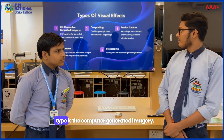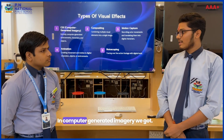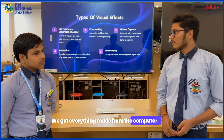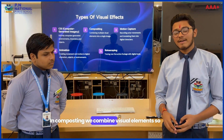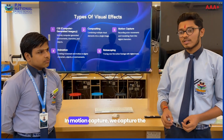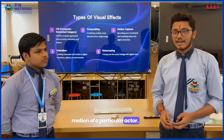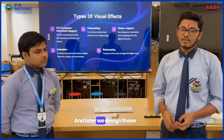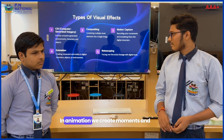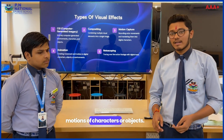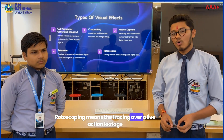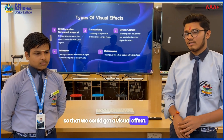In computer generated imagery, we get everything made from the computer. In compositing, we combine visual elements so that we could get a single image. In motion capture, we capture the motion of a particular actor and later design those characters into digital characters. In animation, we create movements and motions of characters or objects. And the last one is rotoscoping — rotoscoping means tracing over live action footage so that we could get a visual effect correctly.